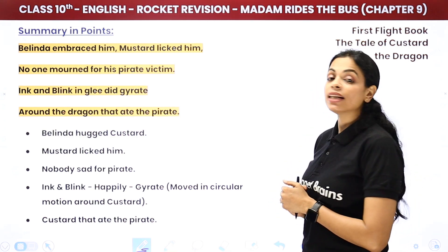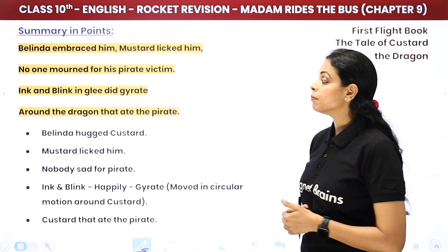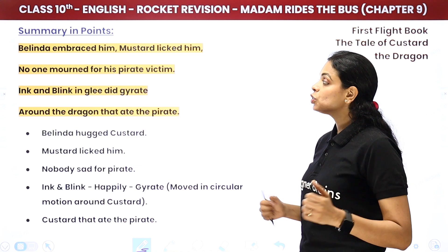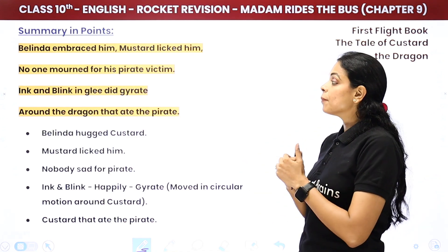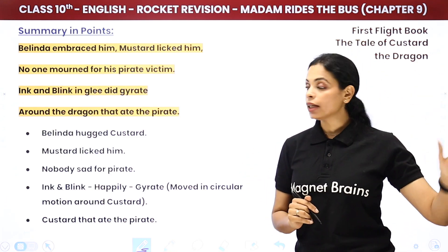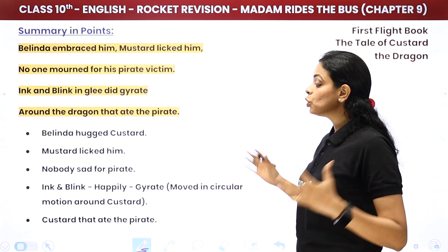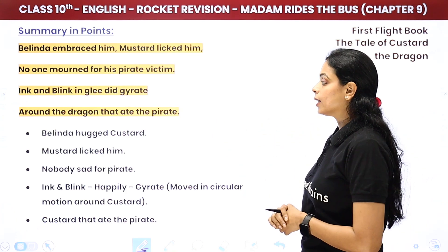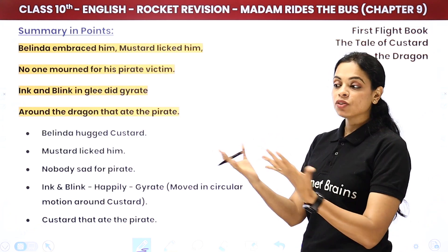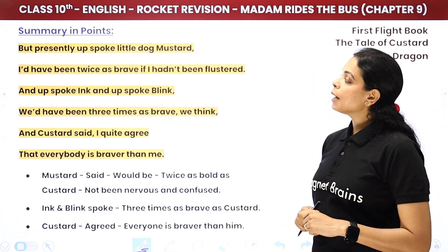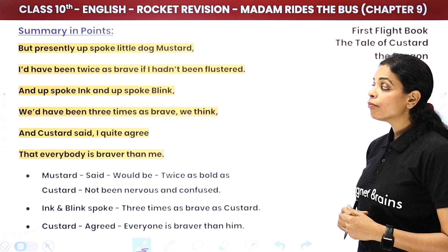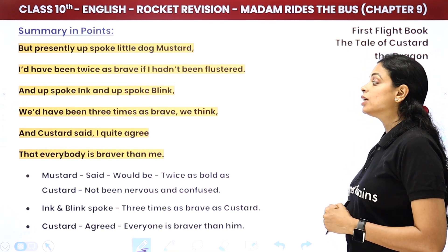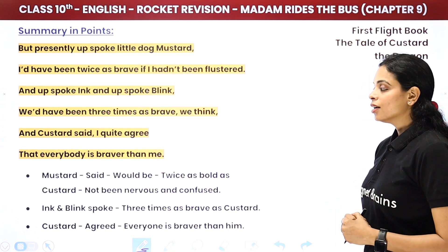Belinda embraced Custard, Mustard licked him, and no one mourned the pirate victim. Ink and Blink gyrated with glee around the dragon that ate the pirate. Then Mustard said he would have been twice as brave if he hadn't been flustered — meaning if he hadn't been so nervous and confused. And Ink and Blink said they would have been three times as brave.